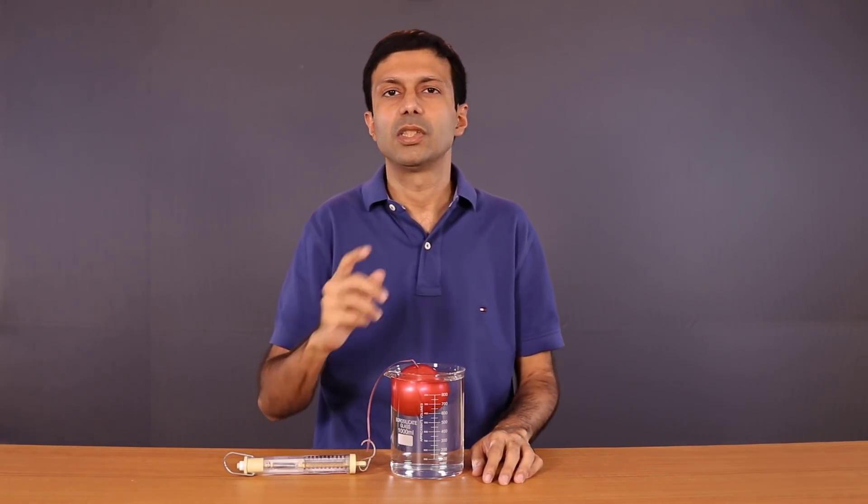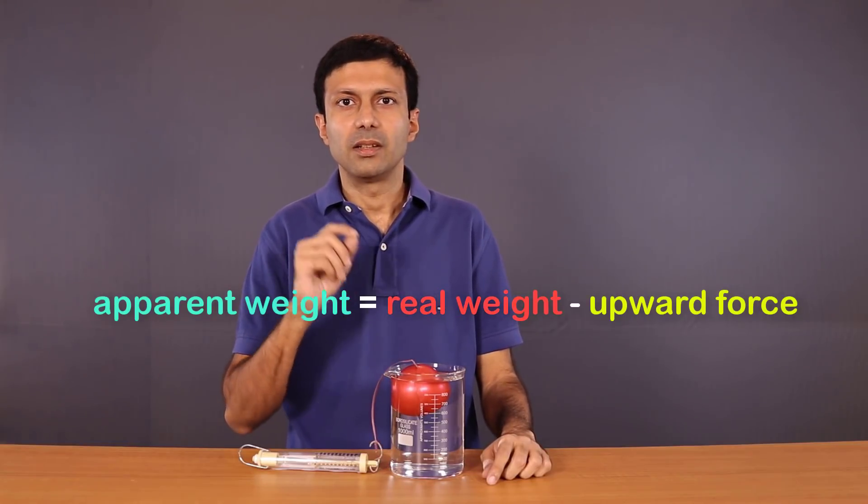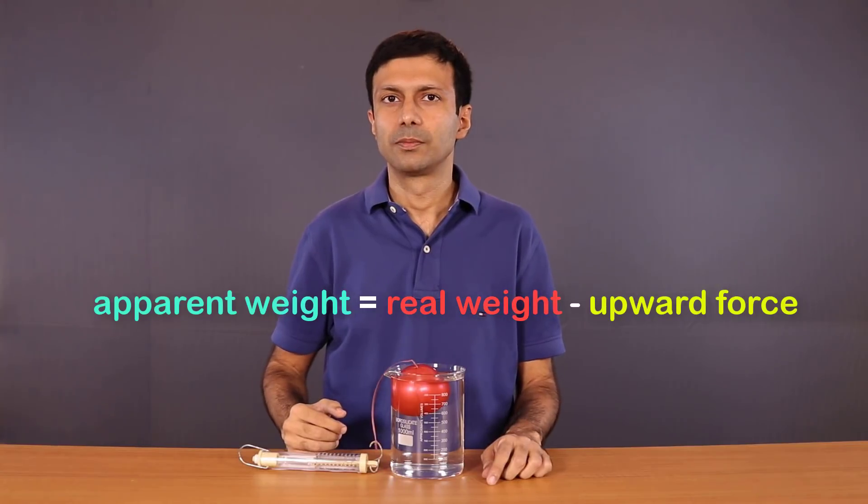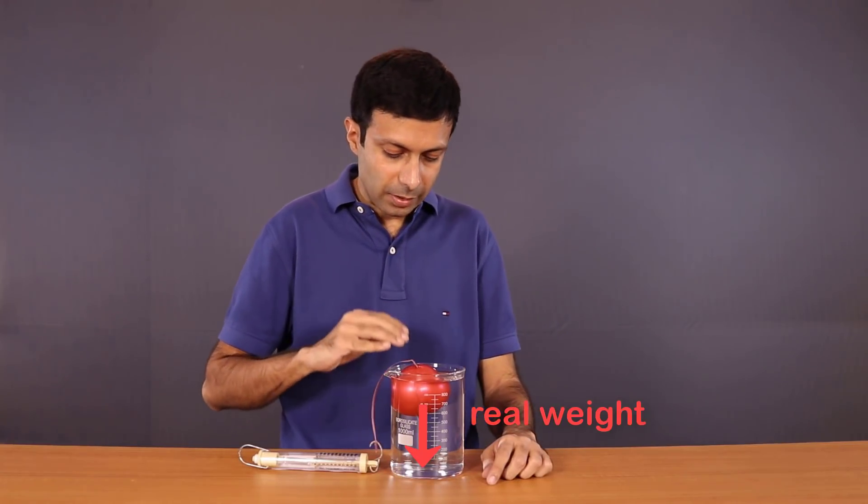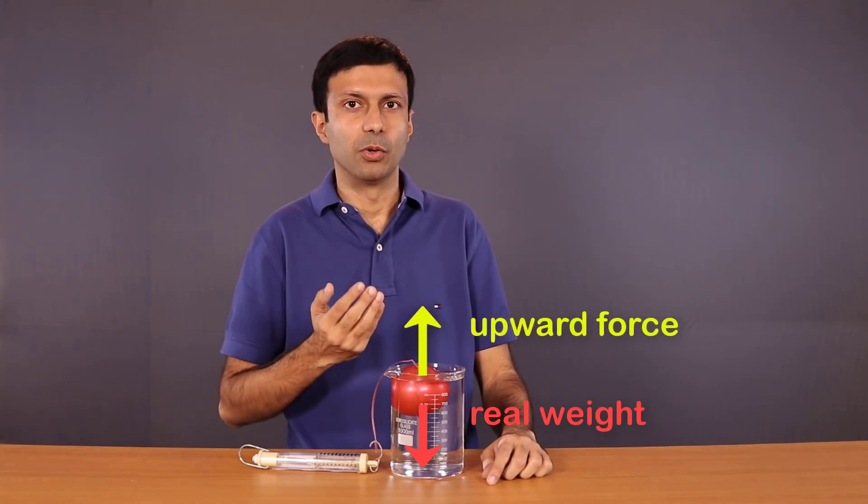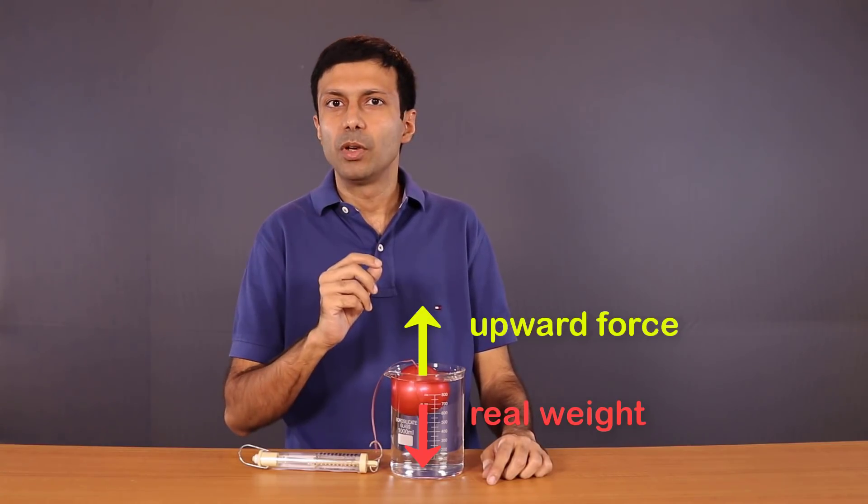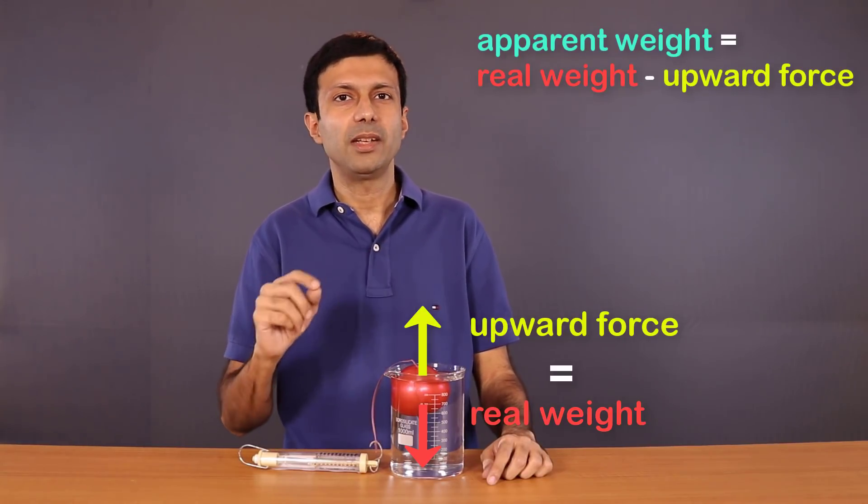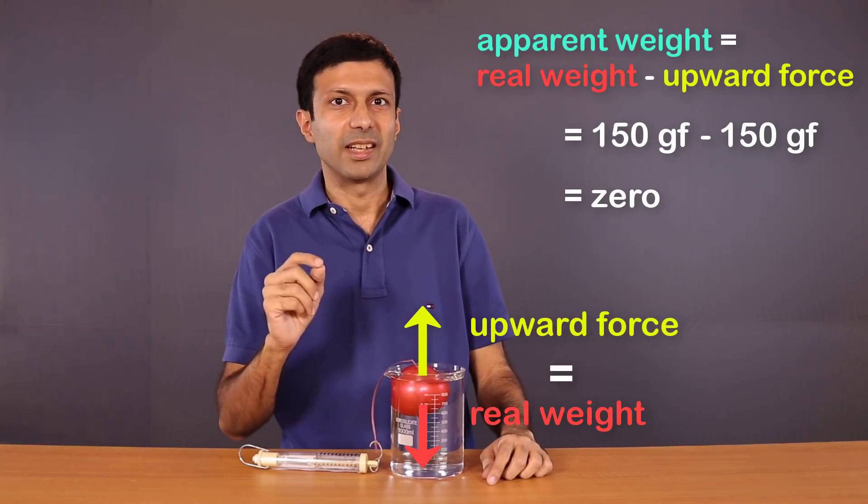Now let's take a look if it matches our formula. So the formula is apparent weight equal to real weight minus the upward force. Now since the object is floating, the real weight is balanced by the upward force. Hence the upward force is equal to the real weight. So the apparent weight becomes zero. And so that's correct, it is weightless.